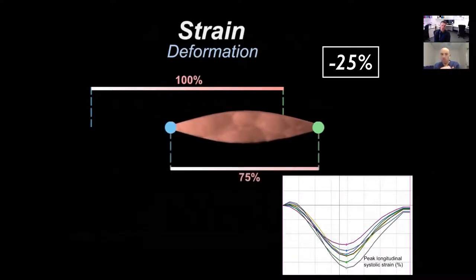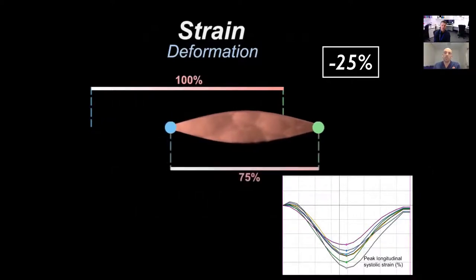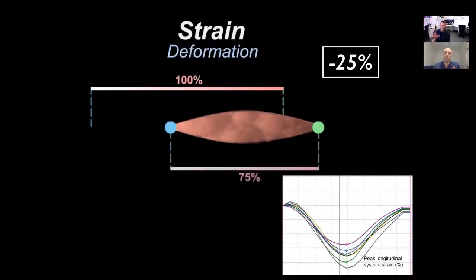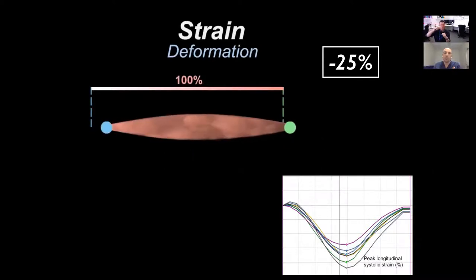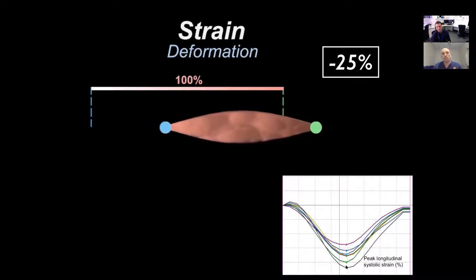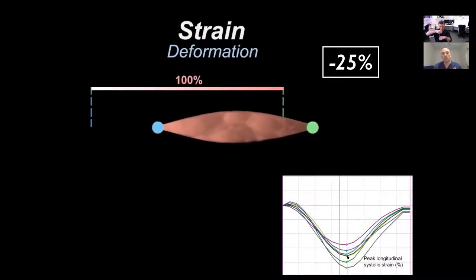We look at one cardiac cycle separated into six segments when analyzing the apical four, apical two, or apical three chamber views. We track the kernels as they come together — they start at zero, come down to peak longitudinal strain at the bottom, which is when the muscle fibers are closest together, and then go back out and should finish where they started.